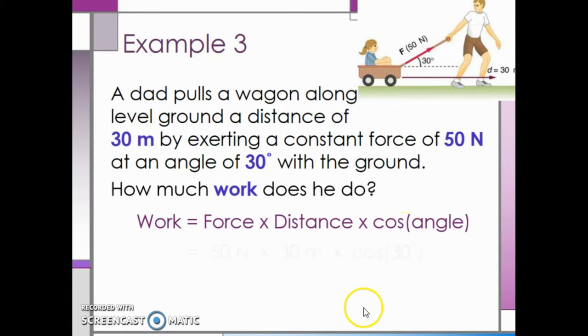We can take 50 newtons for the force, 30 meters for the distance, and multiply that by the cosine of 30 degrees because the angle between the ground and the force is 30 degrees. Therefore, our final answer is 1,300 newton meters or 1,300 joules. This concludes our discussion on solving problems involving work, force, and distance.